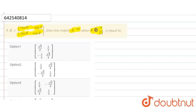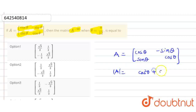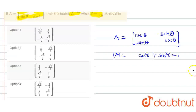When theta is equal to pi by 12, the given question is A equals to [[cos theta, -sin theta], [sin theta, cos theta]]. Here we can see sine theta and cos theta, and the modulus of A bar is equal to cos square theta plus sine square theta, that is equal to 1.